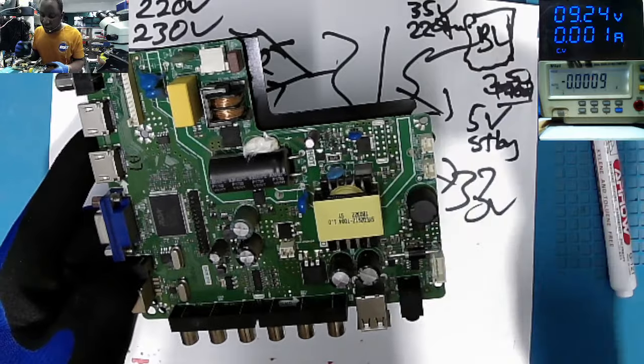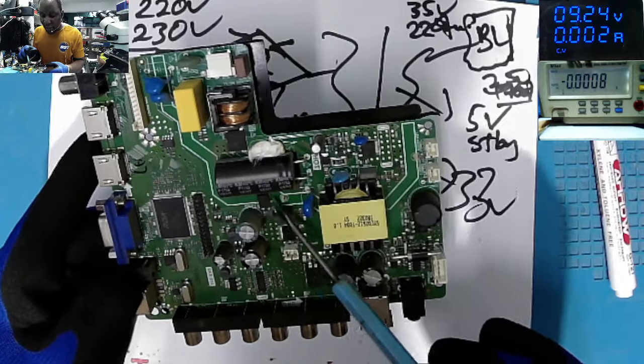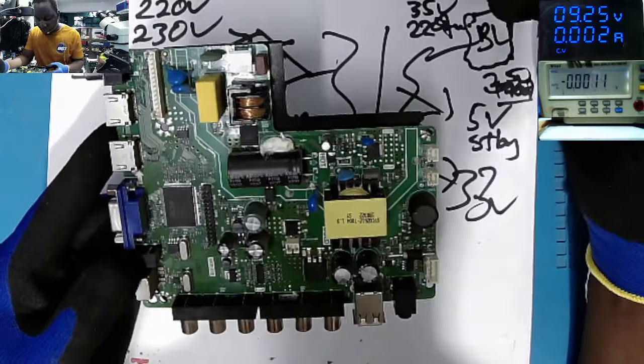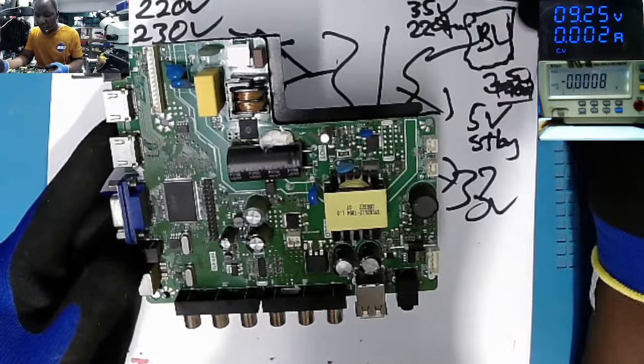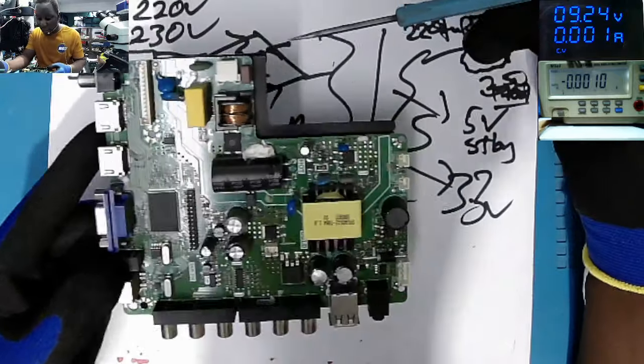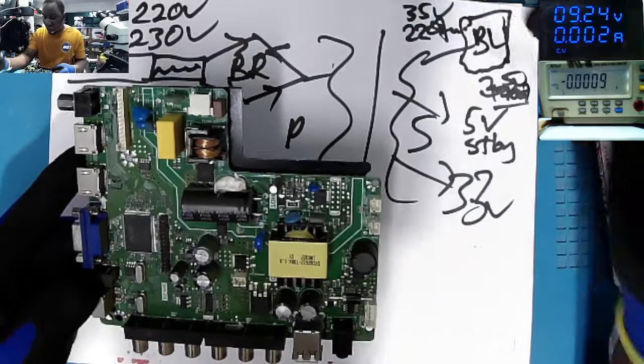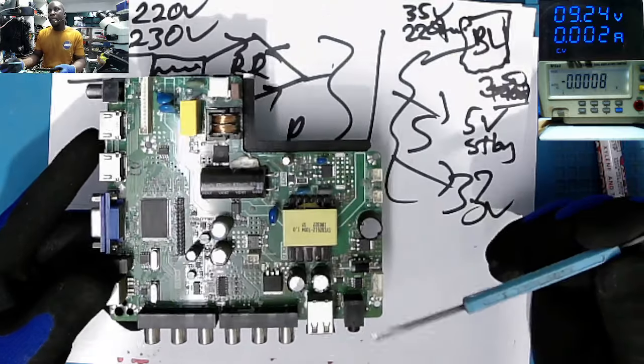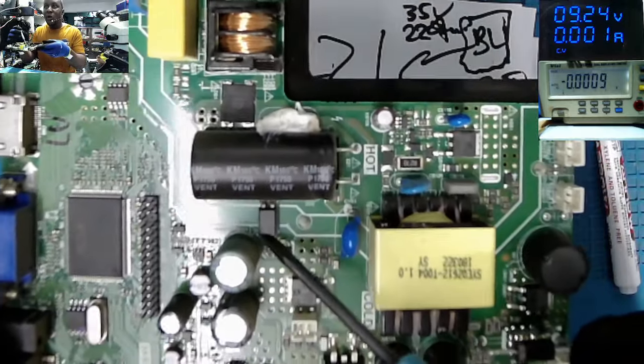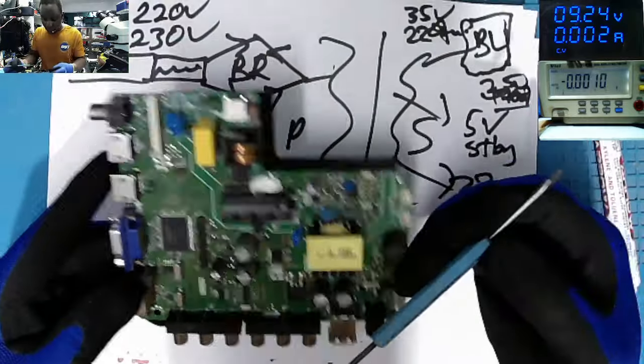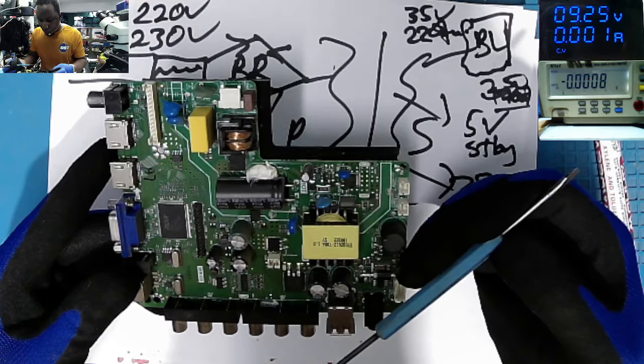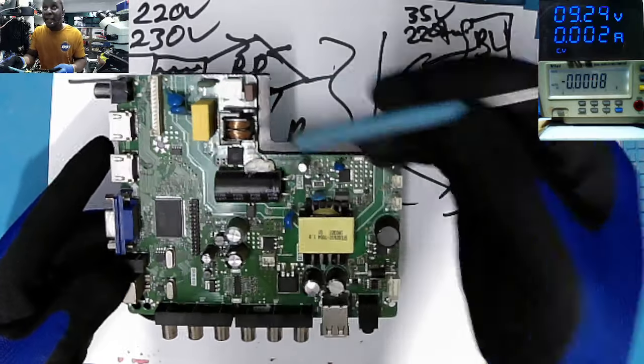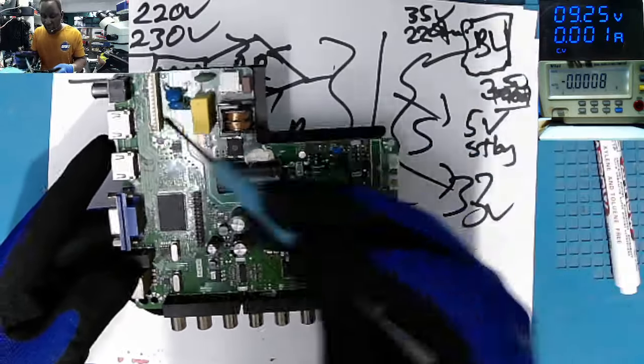On the other end, there must be communication between the primary and the secondary stage of the switching power supply. And what do they use to separate the high voltage from the low voltage? They use this thing, this is called an optocoupler. And it's separating the high voltage and the low voltage area. Here on the high voltage, you can't touch anything, but here you can touch.